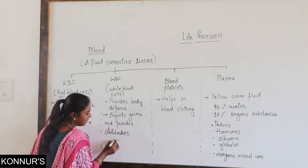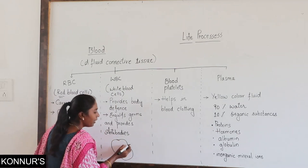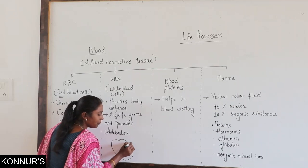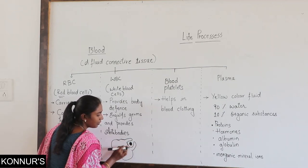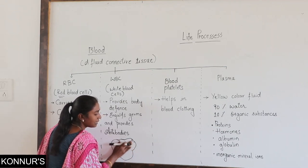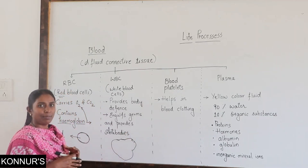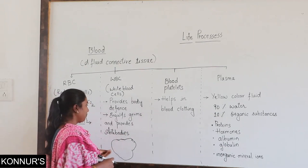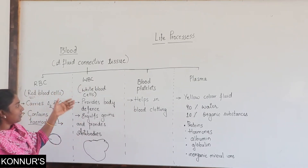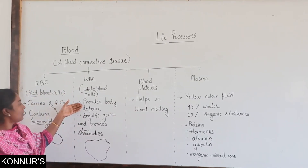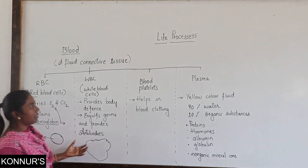These white blood cells are not having a particular shape. When the germ enters, the WBC engulfs the germ and dissolves it because of the enzymes present in it. It also provides antibodies. So the function of WBC is it provides body defense — the defense mechanism of our body. It engulfs the germs which have invaded our body and provides antibodies.